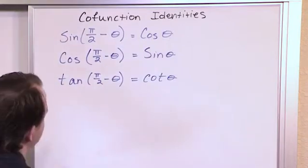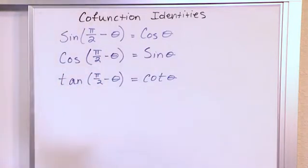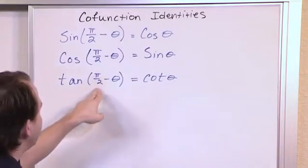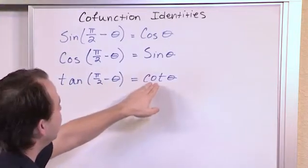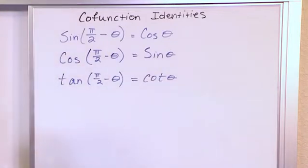So if I start out with some angle, call it pi over 6 radians or whatever, pi over 9 radians, and I shift it by pi over 2, I take the tangent, it's exactly the same thing as just using the cotangent of the original angle I started with.